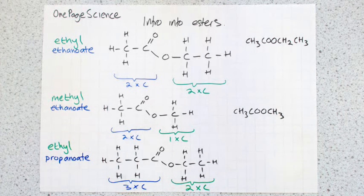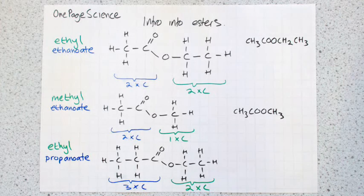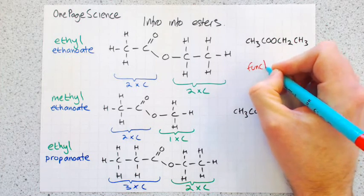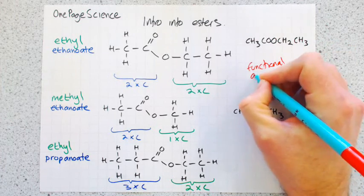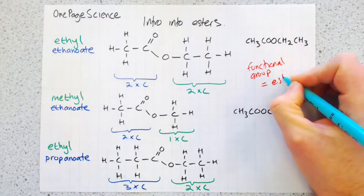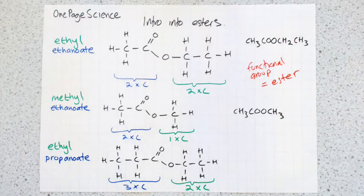So this one is called ethyl propanoate. And the reason these are all esters is because they've all got a functional group.